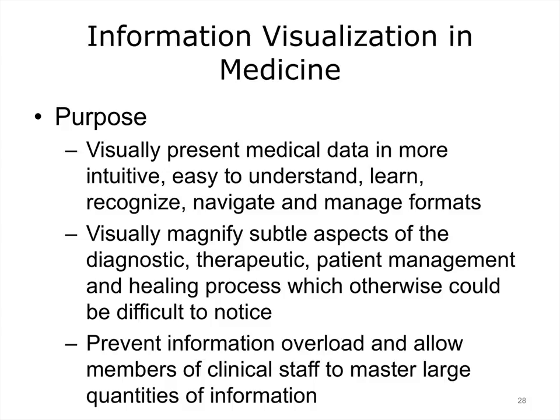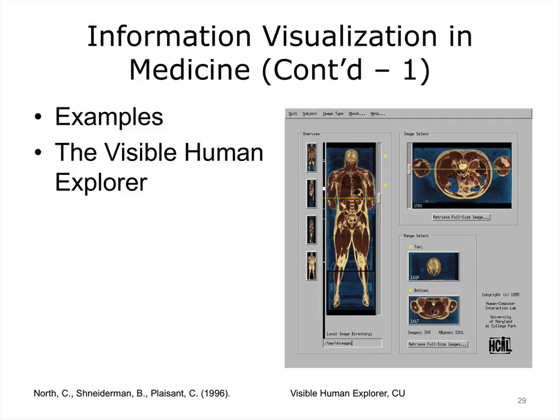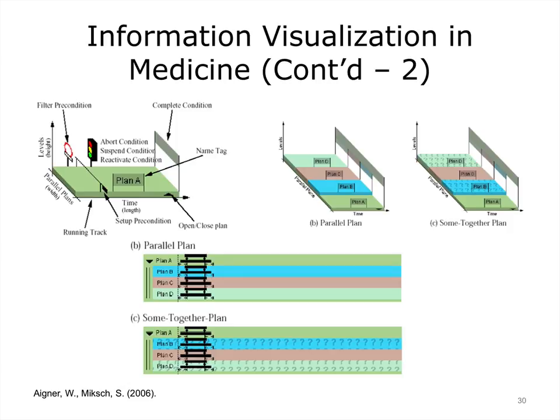Currently, information visualization is not very widespread in electronic health record systems. However, they are gaining momentum. Researchers and designers have explored several different approaches to visualizing clinical data. One way is to structure it around physical systems — for example, showing data about patients organized around the patient's organs and body systems. Another visualization focuses on clinical decision-making, showing a diagnostic flow, decisions, and plans in regards to patient care.